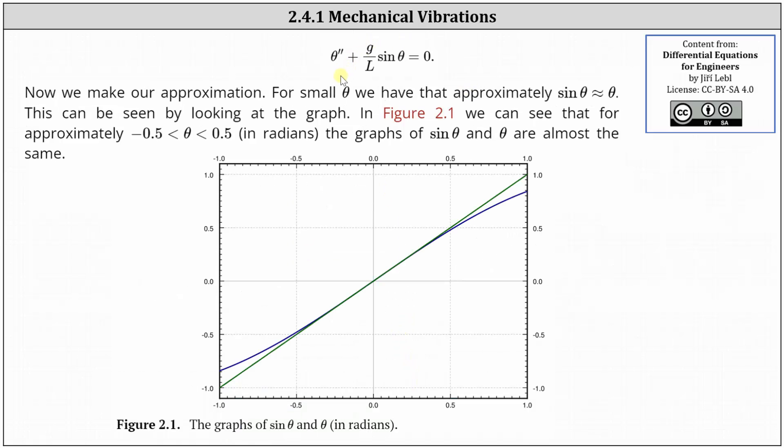And now we make an approximation. For small theta, we have that sin(theta) is approximately theta. If we take a look at the graph below, we have the graph of sin(theta) in blue and the graph of theta in green. Notice around x equals zero, or in the open interval from negative 0.5 to positive 0.5, the graphs are almost the same, which is why we can say sin(theta) is approximately theta for small theta.